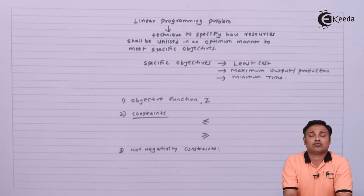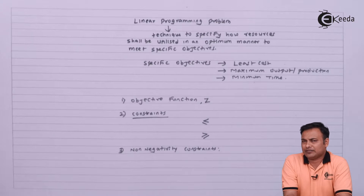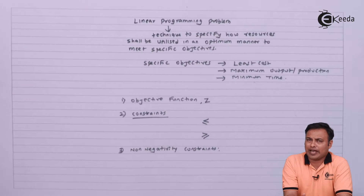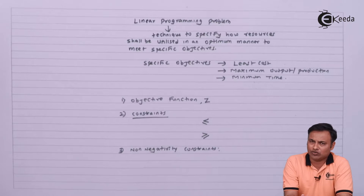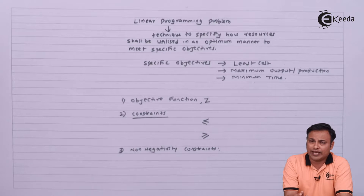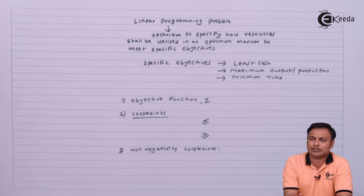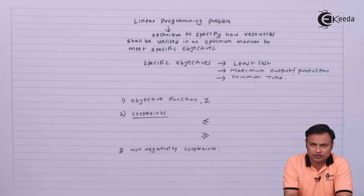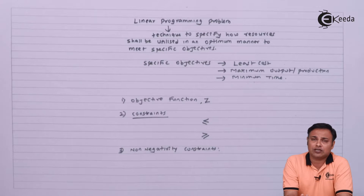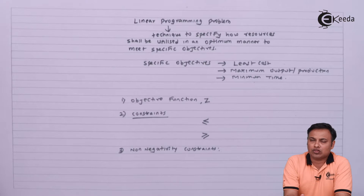Non-negativity constraints basically define the value of any two variables assumed in LPP. For example, if I assume x number of chairs and y number of tables, then x and y cannot be negative, because in real life I can make zero tables or zero chairs but I cannot make minus five chairs or minus two tables.